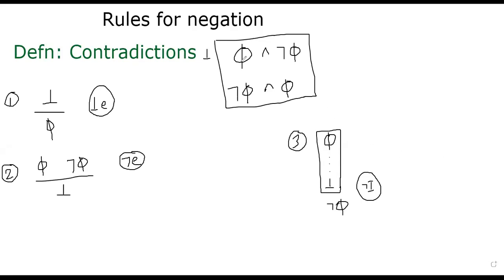So, contradictions are basically pi and not pi, or not pi and pi. I mean, these two things are equal anyways. So, if you have an expression of the form pi and not pi, you can say this expression is a contradiction. You cannot have two things to be true simultaneously if they are opposite of each other. This is contradiction.